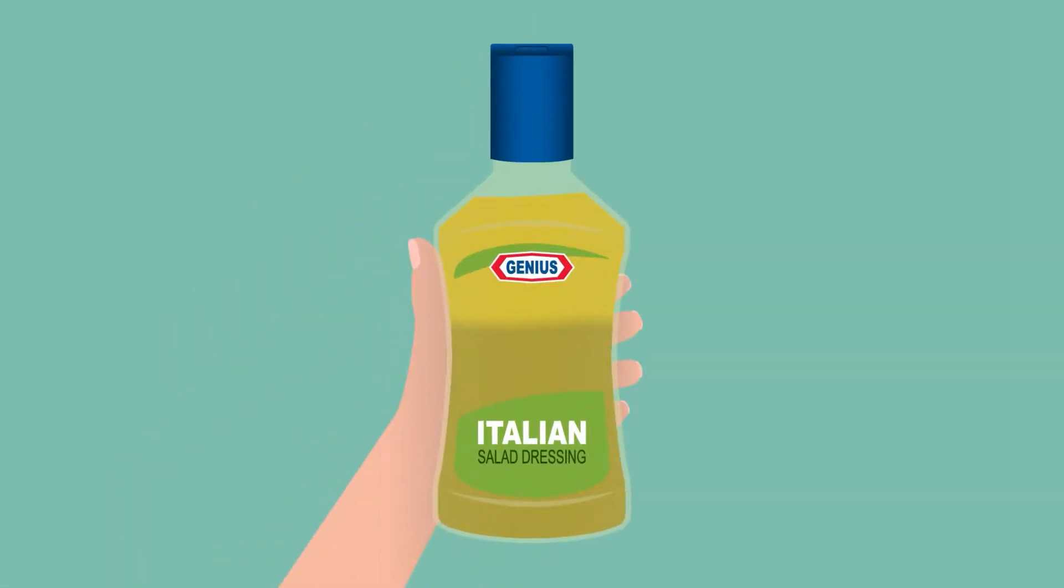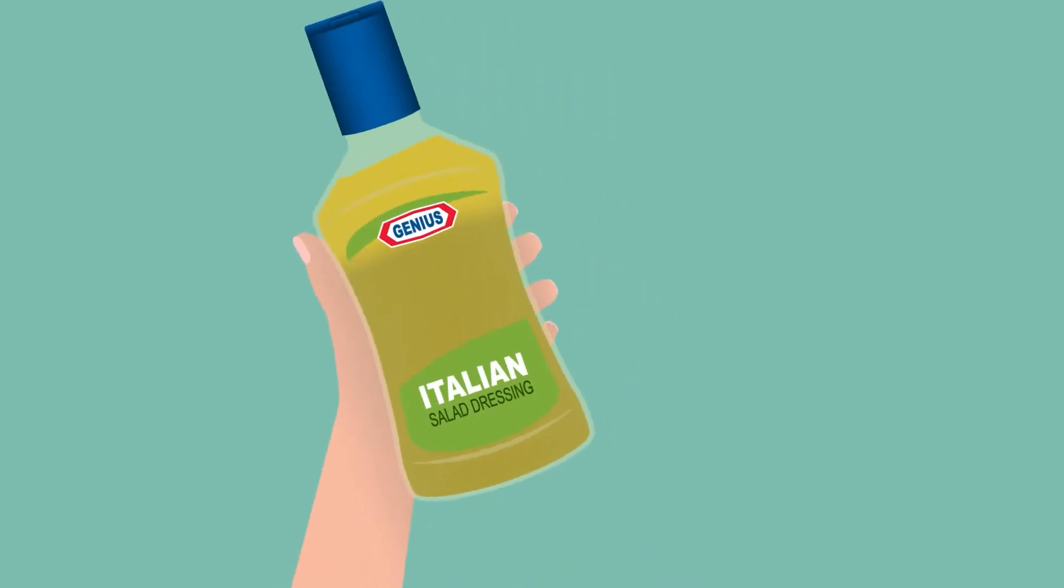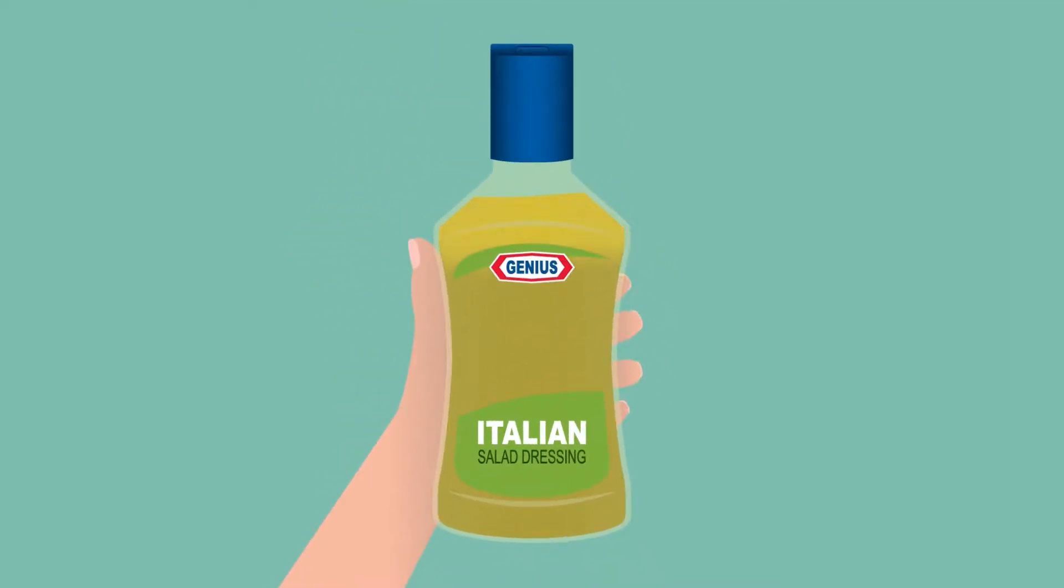Think of it like a bottle of Italian salad dressing. The oil layer separates from the rest of the dressing. Even when you shake the bottle thoroughly and the dressing looks like it is mixed together, within seconds the layers will separate again.